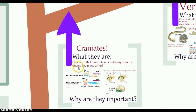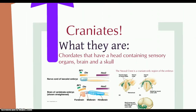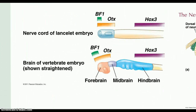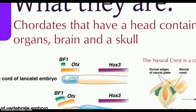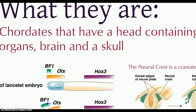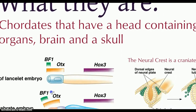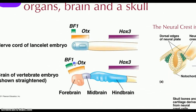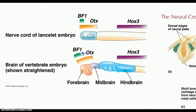Now let's talk about heads. At this point we're going to branch into craniates, referring to the cranium. These individuals have brains and skulls. A primary feature is that they are chordates with a head and a brain.